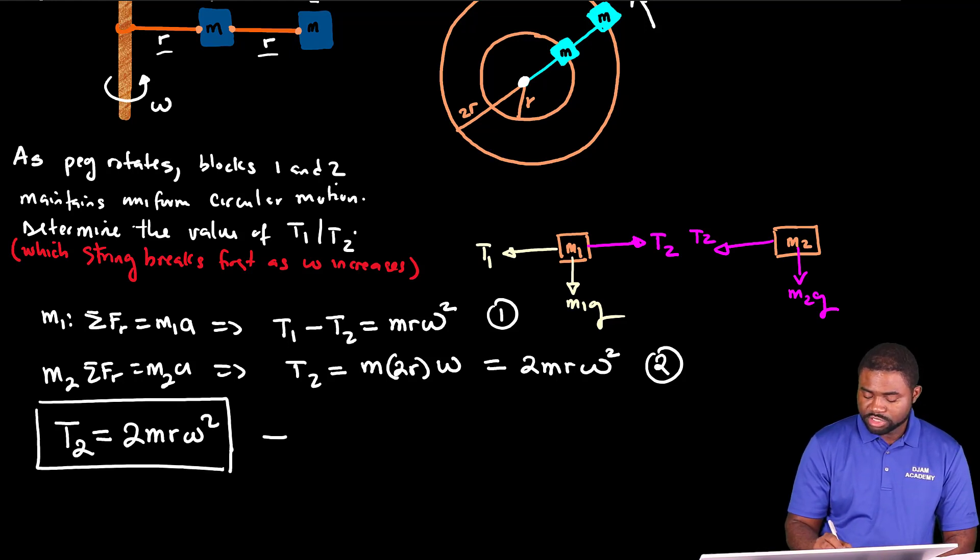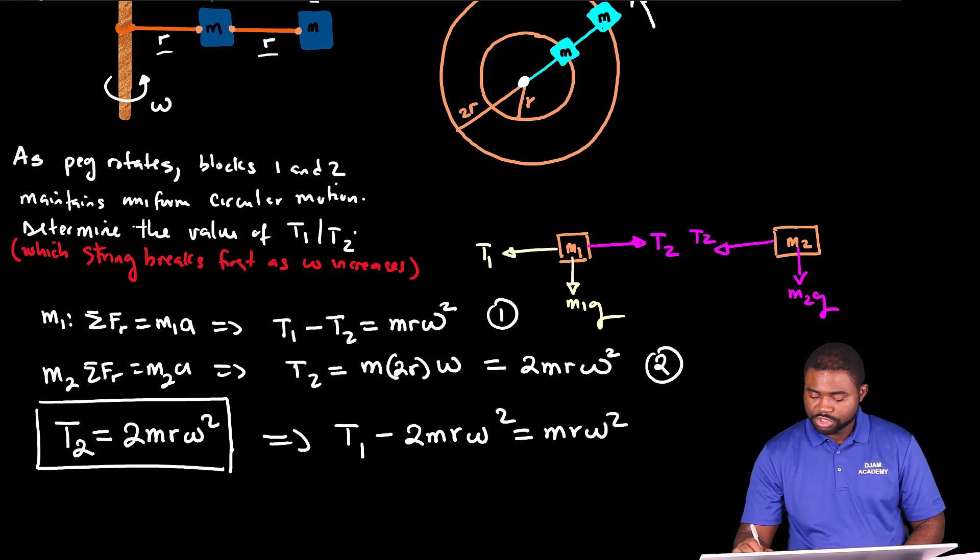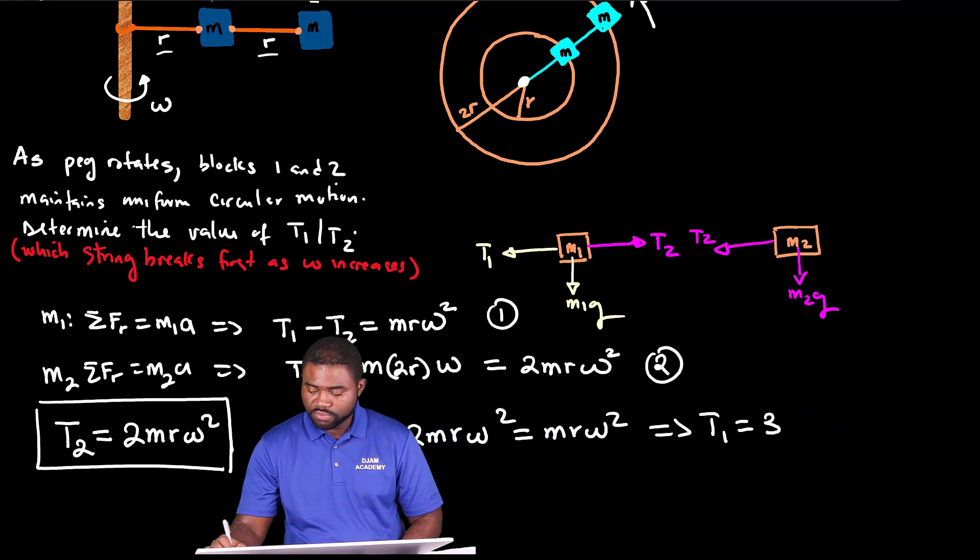This would mean that T1 minus 2MR omega squared equal to MR omega squared, which implies that T1 is equal to 3MR omega squared.